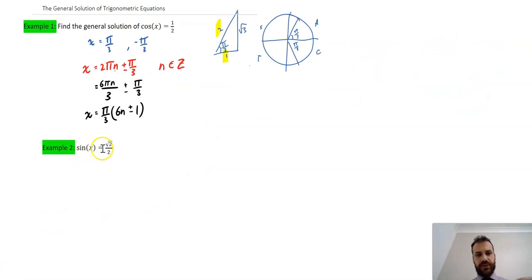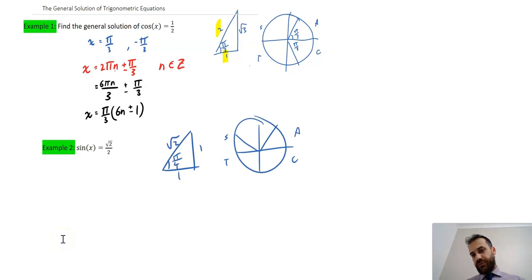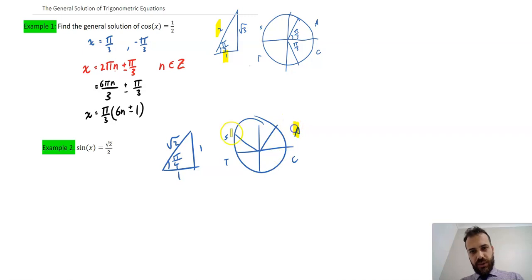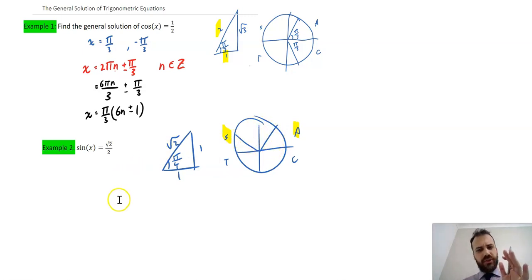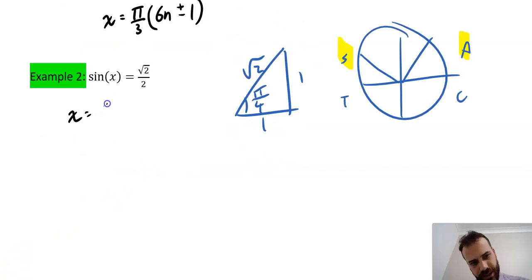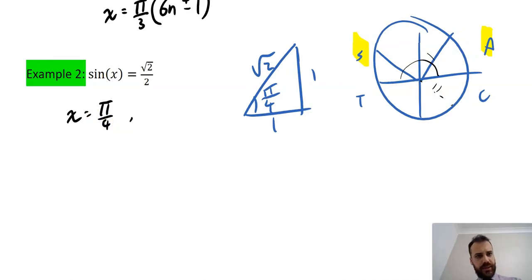Here's another example: sin x equals √2/2. Again, I'll use a standard triangle and a unit circle. Note that √2/2 is the same as 1/√2, which using the standard triangle tells me x is going to be π/4. Using the unit circle, sine is positive in the first and second quadrants, so the two answers are π/4 and 3π/4.